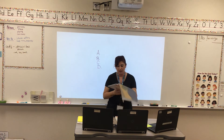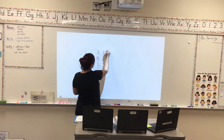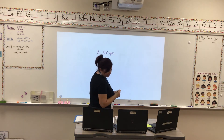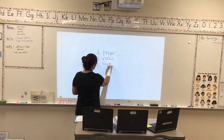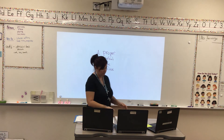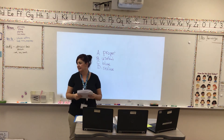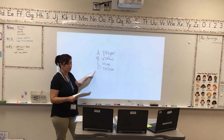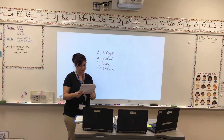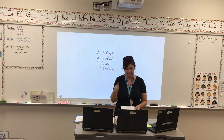Now we're going to do some fill-in-the-blank sentences. A is the word proper, B is the word useful, C is the word blue, and D is the word realize. You can still put A, B, C, or D. Aunt Silver is very fancy and — is it A, proper; B, useful; C, blue; or D, realize? Weston, what did you put? Proper. Good job — if you put proper, it should be A.